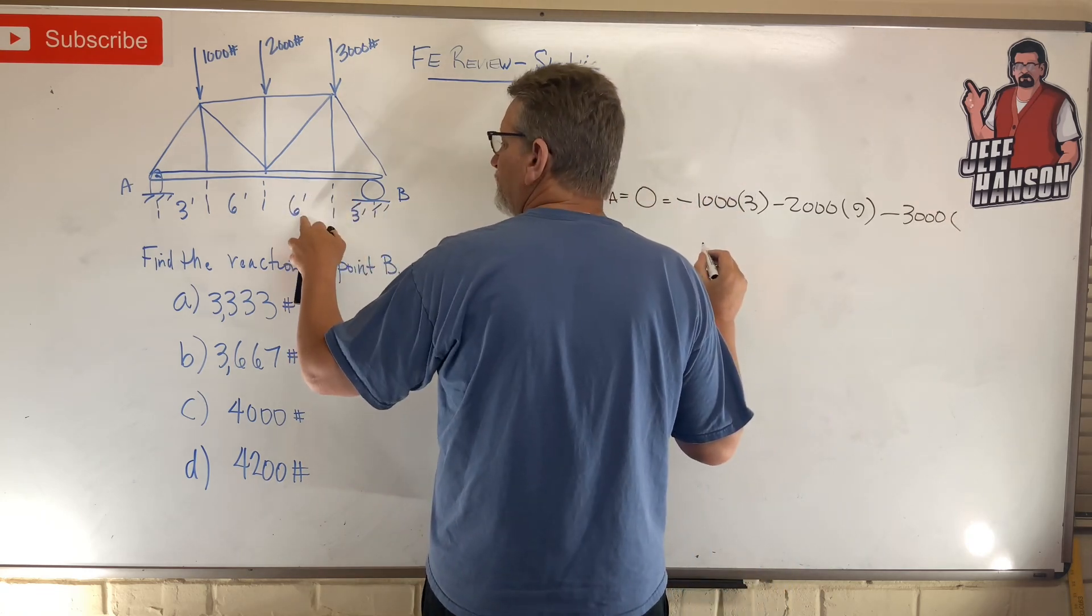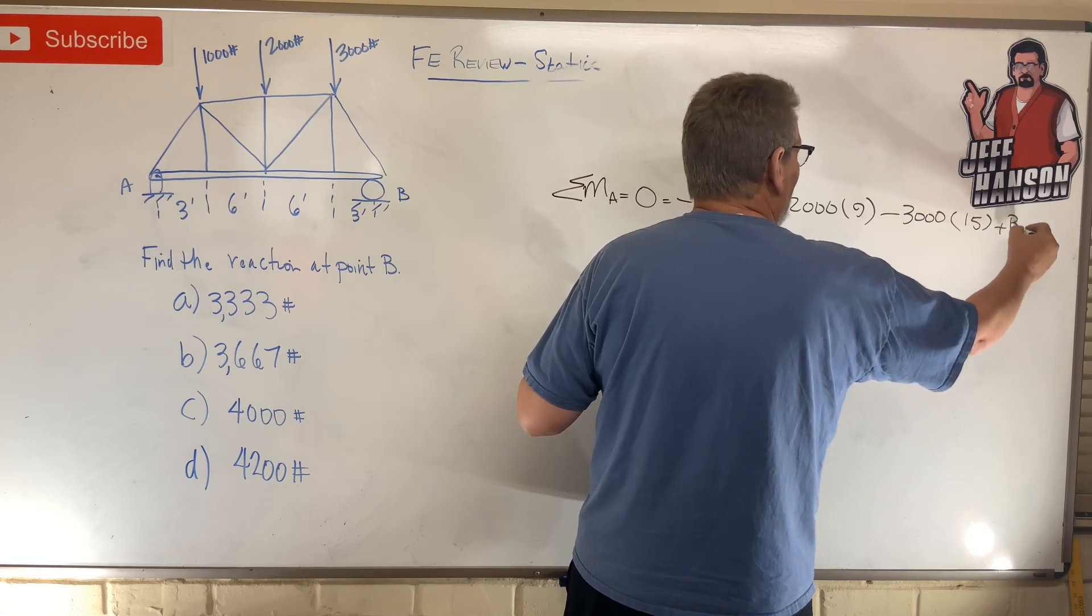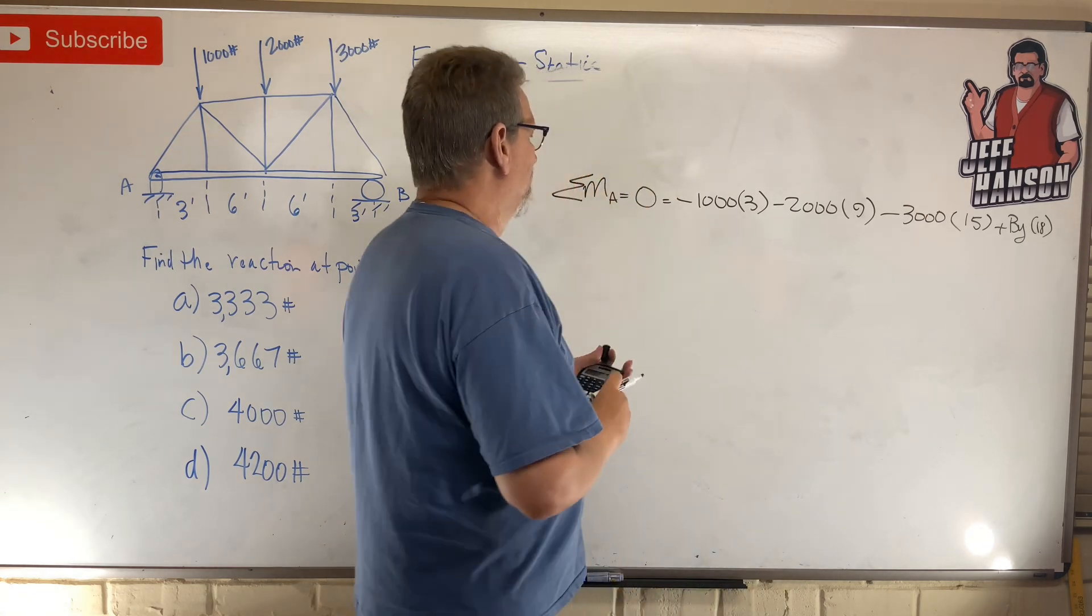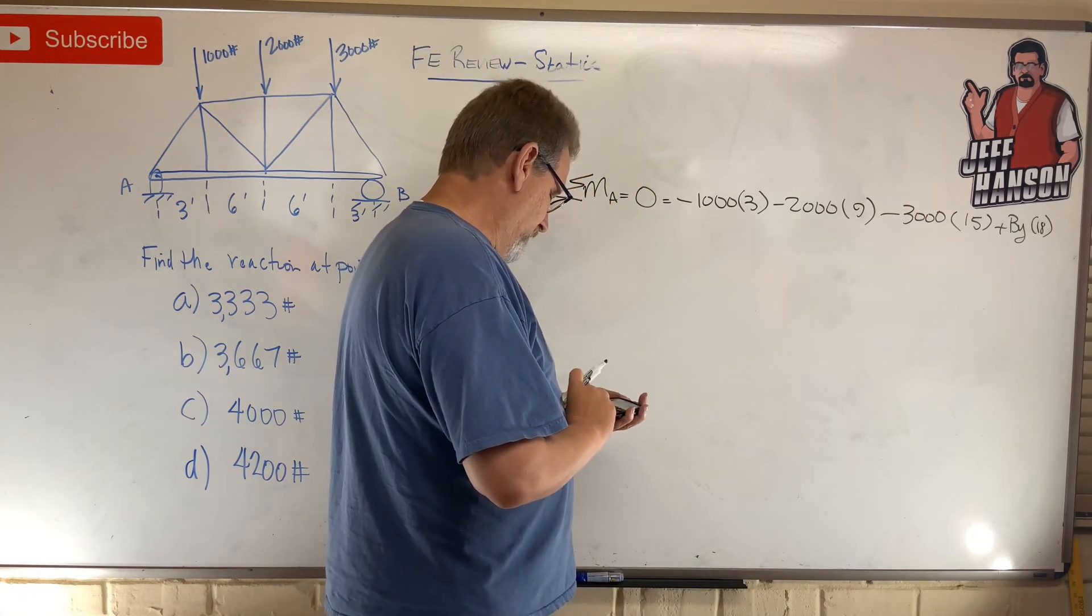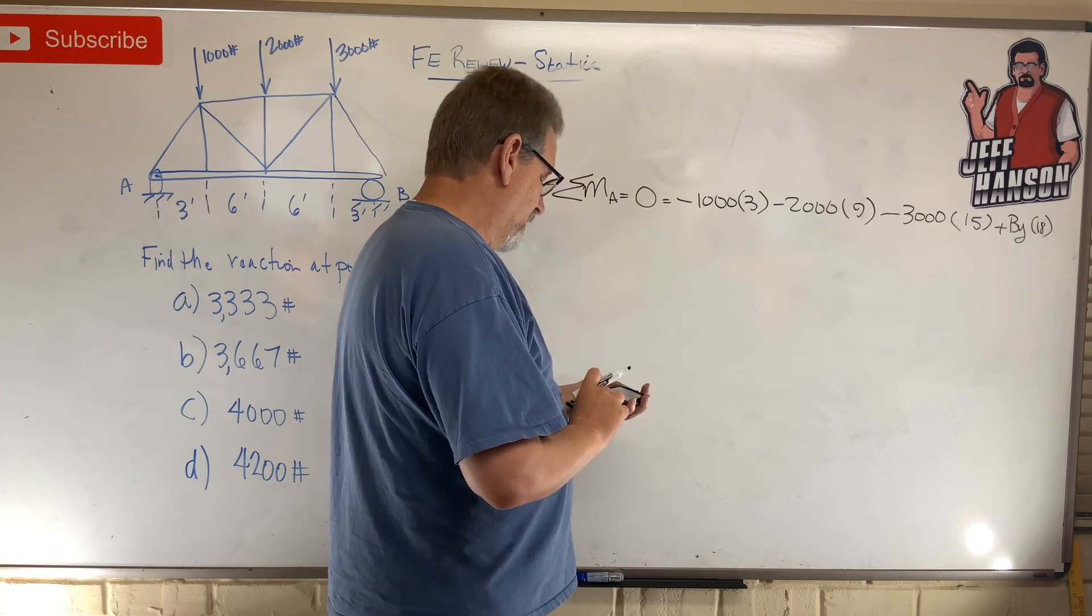...was the twelve, fifteen. And then plus BY times eighteen. Okay, here we go, clear, clear. Okay, three thousand plus...